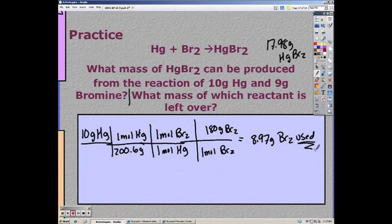It doesn't want to know how much I used. It wants to know how much is left over. So anytime you're trying to find how much is left over, you've always got to subtract from the original amount. So 9 minus 8.97 gives me 0.03 grams of bromine left over.